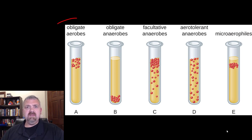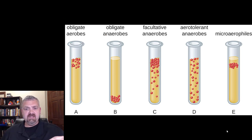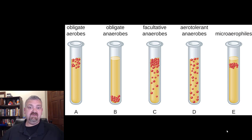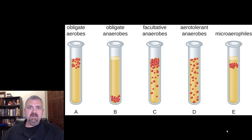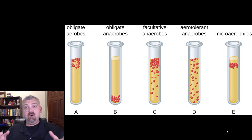So the first group is the obligate aerobes. As you can see by looking at this test tube, they can only grow at the top. The top portion of a test tube has about the same amount of oxygen as the atmosphere around us; the bottom has none, as long as it was properly prepared; and the middle has about half as much oxygen as the atmosphere. Obligate aerobes have to have oxygen to survive, which is why they only grow at the top. This means they require oxygen and have found ways to neutralize its toxic forms.